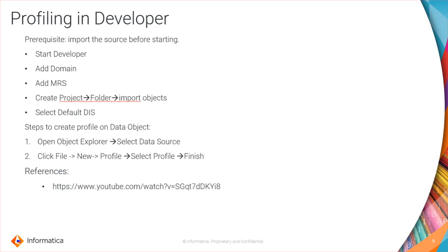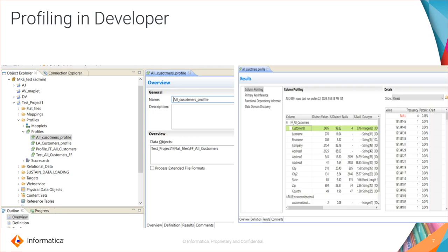When using Developer, you must have a source imported prior. The steps are: start the Developer, add domain, add MRS, create a new project folder, import objects, and select the default DIS. Once the object is imported, click on File > New Profile, select the profile, and click Finish. This slide shows an overview of profiling in Developer along with the profile results — the sample taken is the All Customers profile.